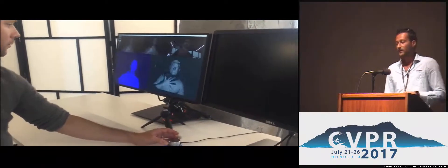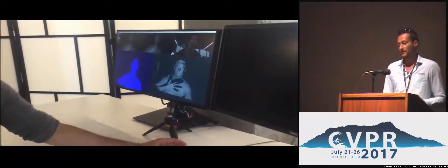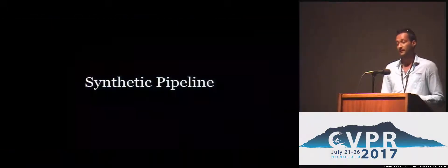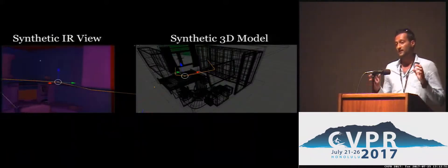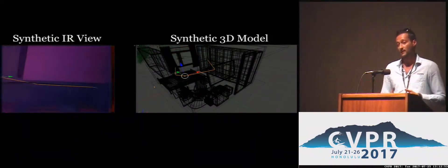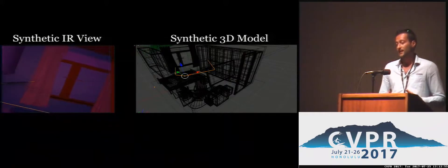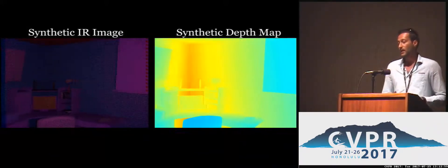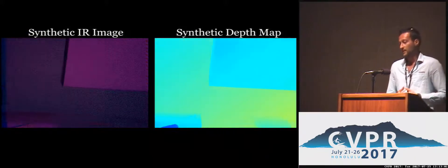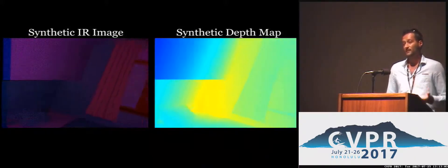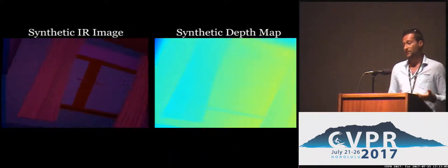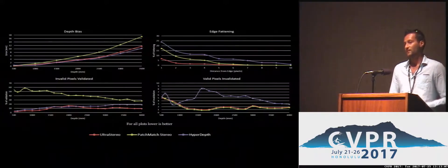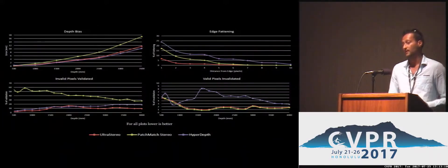To really evaluate the performance of the system, we also had to build a fully synthetic pipeline. We started from a 3D model and placed virtual stereo cameras in the scene. These allow us to synthesize stereo images together with an active pattern illuminator, as well as ground-truth disparity maps. Thanks to these, we can compute not just standard metrics such as depth bias and jitter, but also more sophisticated measurements such as edge fattening and invalidation scores.